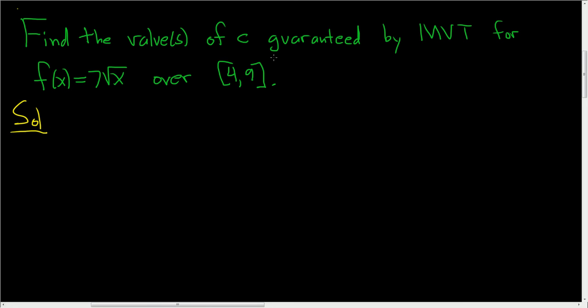Before we do the problem, let me refresh your memory on the formula we're going to use. So f of C is equal to 1 over B minus A times the definite integral from A to B of f of X with respect to X. So what is this? This is the average value of the function.